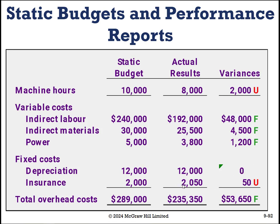When we use more for insurance than we budgeted and it goes 50 over, that's unfavorable. Adding these all up, including the favorable items — this should be marked favorable and the math should follow.